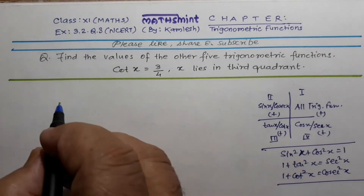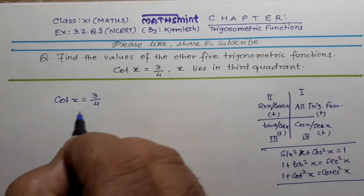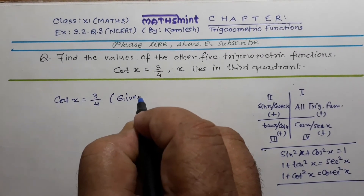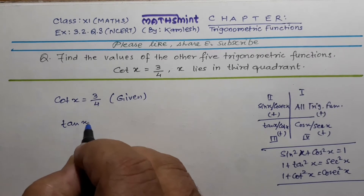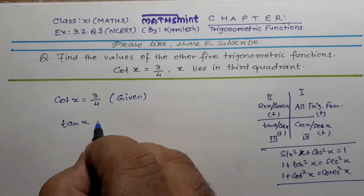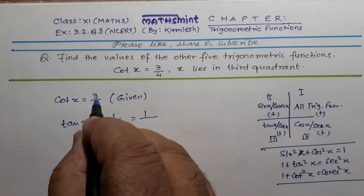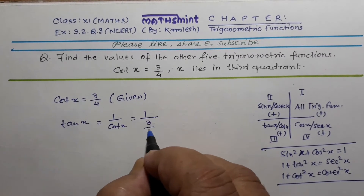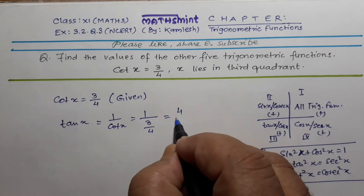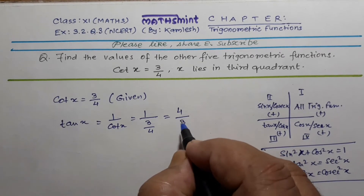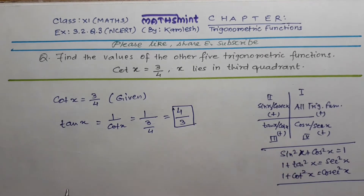Now coming to the question. Cot x = 3/4 is given. I know that tan x is the reciprocal of cot, so tan x = 1/cot x = 1/(3/4). This gives tan x = 4/3.